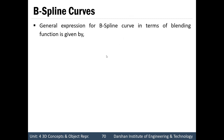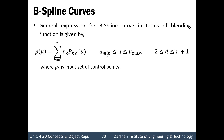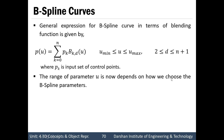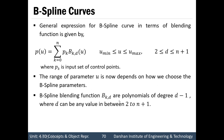A general expression for a B-spline curve in terms of blending function is given by P(u) equals summation over k equals 0 to n of Pk into Bk,d of u. Where u is between u_minimum and u_maximum, and d can be between 2 and n plus 1. Here Pk is an input set of control points. The B-spline blending functions Bk,d are polynomials of degree d minus 1, where d can be any value between 2 to n plus 1.